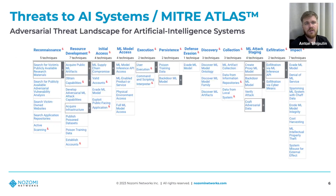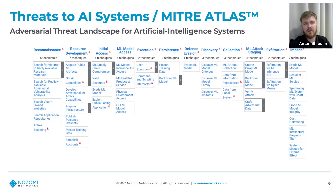The first domain is threats to AI systems. AI systems — with their machine learning models and data — may be an attractive target for cyber attackers. A great resource is the MITRE ATLAS framework, which collects possible attack techniques against AI-based systems, such as data poisoning, evading machine learning models, and denial of machine learning service attacks.